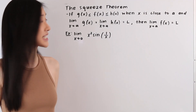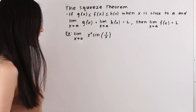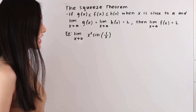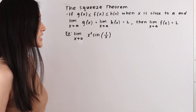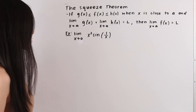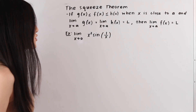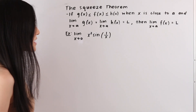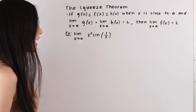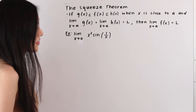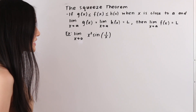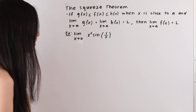The squeeze theorem tells us that if g(x) ≤ f(x) ≤ h(x) when x is close to a, and the limit as x approaches a of g(x) equals the limit as x approaches a of h(x) equals L, then the limit as x approaches a of f(x) is also equal to L.